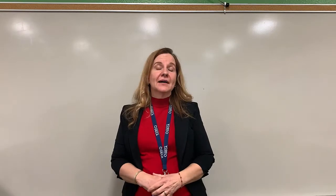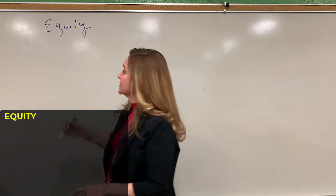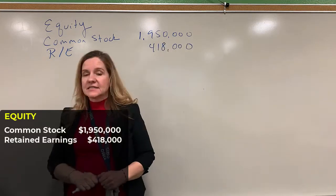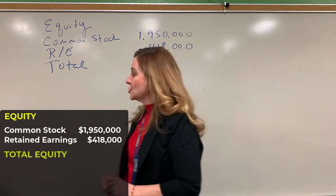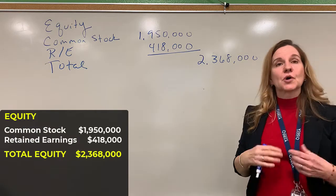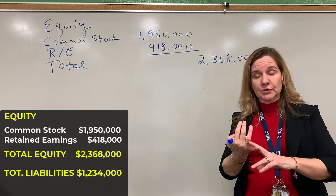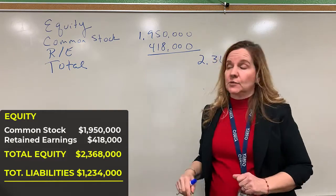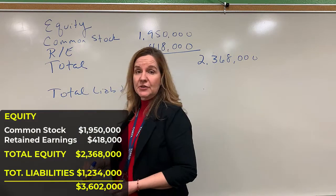Now we are going to add equity. Our equity is common stock and retained earnings — both equity accounts. Common stock is $1,950,000 and our retained earnings is $418,000. We total up our equity to get $2,368,000. The very last part is total liabilities and equity: we take the current liabilities and long-term liabilities and add that to total stockholders' equity, giving us total liabilities and equity of $3,602,000.